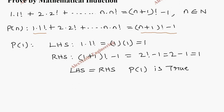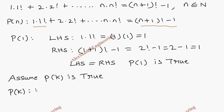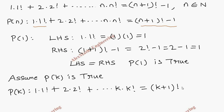Now we assume P of k is true. So let's assume P of k is true, meaning: 1 into 1 factorial plus 2 into 2 factorial plus dot dot dot k into k factorial equals k plus 1 factorial minus 1.